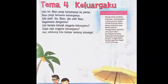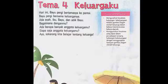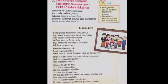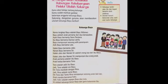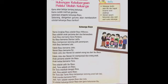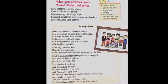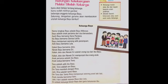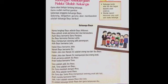Ayo sekarang kita belajar tentang keluarga. Selanjutnya anak-anak buka buku halaman 45. Menguraikan kosa kata hubungan kekeluargaan melalui silsilah keluarga. Keluarga terdiri dari atas ibu dan bapak beserta anak-anaknya. Silsilah berarti keturunan atau asal-usul suatu keluarga.